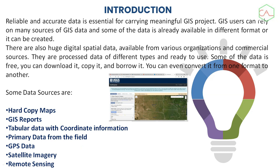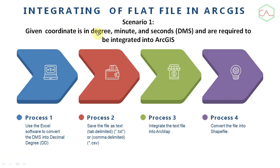When integrating flat files into ArcGIS, most GPS coordinates are in degrees, minutes, and seconds, so it is very important to learn how to convert these coordinates into decimal degrees using Excel. The process is: first, use Excel to convert degrees, minutes, and seconds into decimals; then save it as a text file or CSV. You can then integrate the text file into ArcMap and convert it into a shapefile, which becomes the data for ArcMap to make use of.